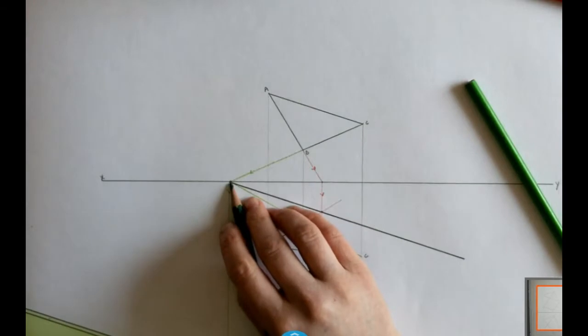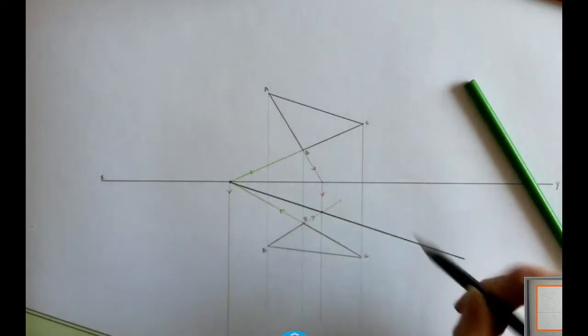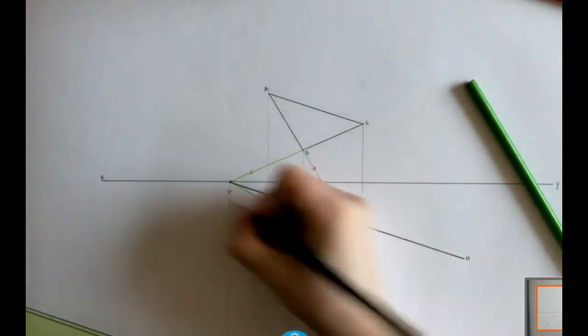It is very rare that that construction would actually lie on your XY line. If it didn't lie on your XY line, you'd obviously extend on this line until it hit your XY line. So that's my horizontal trace.